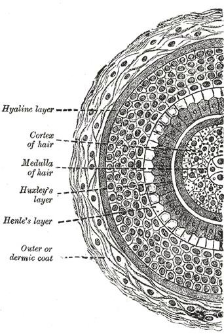Hair growth begins inside the hair follicle. The only living portion of the hair is found in the follicle. The hair that is visible is the hair shaft, which exhibits no biochemical activity and is considered dead. The base of a hair's root, the bulb, contains the cells that produce the hair shaft. Other structures of the hair follicle include the oil-producing sebaceous gland which lubricates the hair and the erector pili muscles, which are responsible for causing hairs to stand up. In humans with little body hair, the effect results in goose bumps.